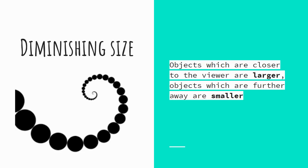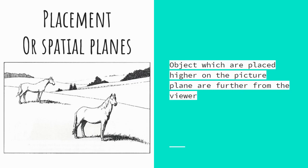Diminishing size — some objects are larger and some are smaller. Those that are smaller are further away. Which dot is the furthest from us? Well, if you guessed that one, you would be correct — it is the smallest dot. Placement, or spatial planes. This is probably one of the trickier ones. The idea that objects that are closer to us, the viewer, are closer to the bottom of the page. So which horse is closest to us, the one on the left or the one on the right? If you guessed the one on the right, then you'd be correct.